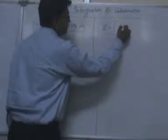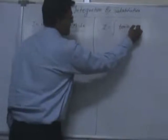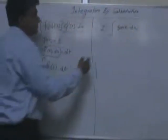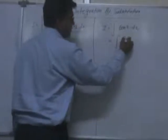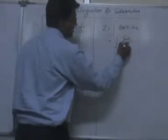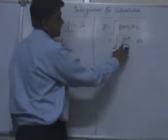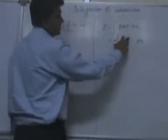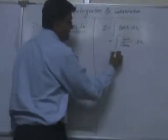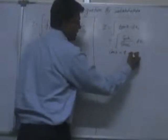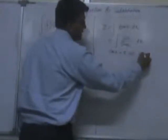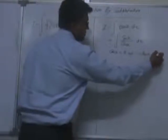Let us understand this by an example. Consider the integration of tan(x) dx. We can write this as the integral of sin(x) over cos(x) dx. Here, if we assume cos(x) as t, then its differentiation, sin(x), is also present. So we let cos(x) equal to t, which implies minus sin(x) dx equals dt.